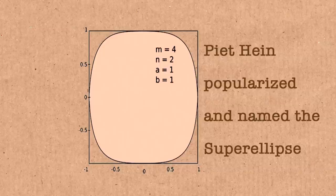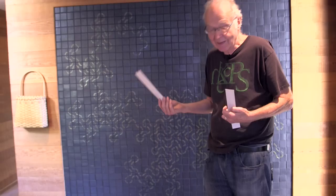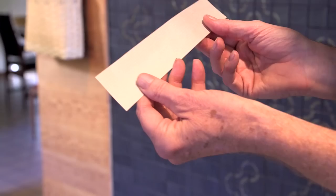So what's the idea of the dragon curve? This is something invented by a couple of physicists in the late 60s. You start with a piece of paper and you fold it, fold it again, and you fold it again.